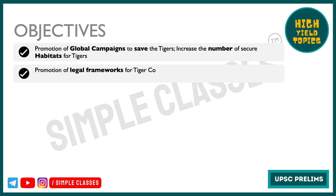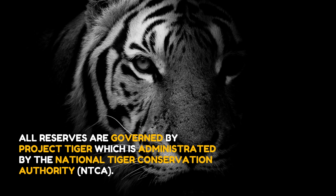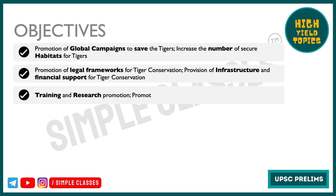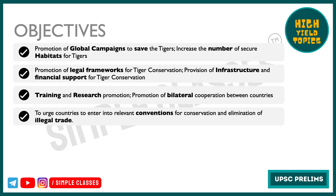Secondly, they promote legal frameworks for tiger conservation, along with providing provision of infrastructure and financial support for tiger conservation. Thirdly, they are invested in training and research. The forum also promotes bilateral cooperation between various countries for the purpose of saving tigers. It also urges countries to enter into relevant conventions for conservation and elimination of illegal trade.